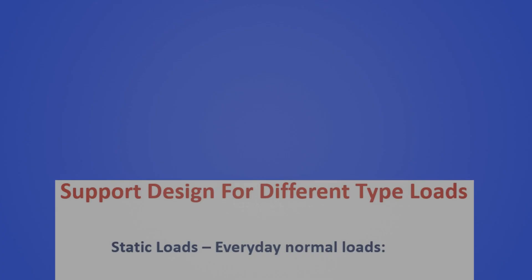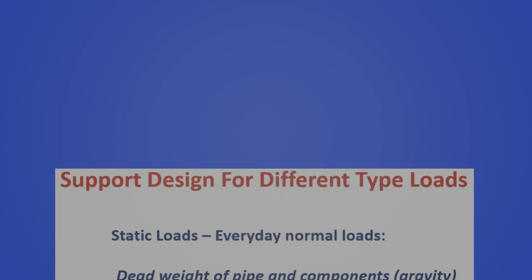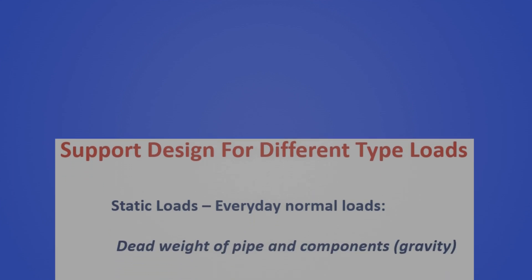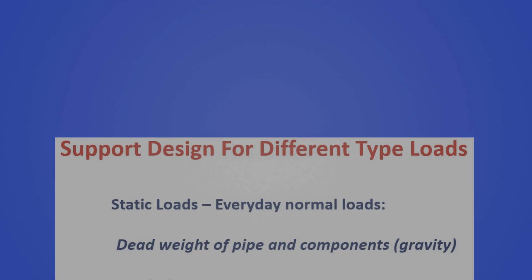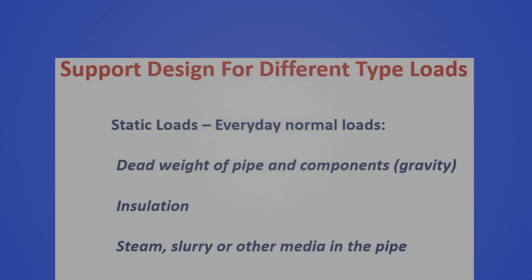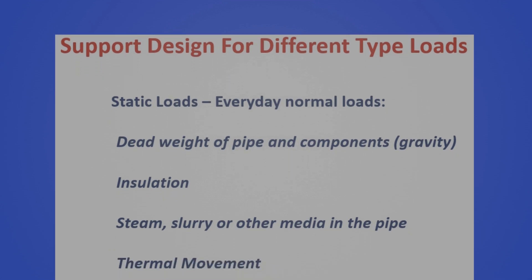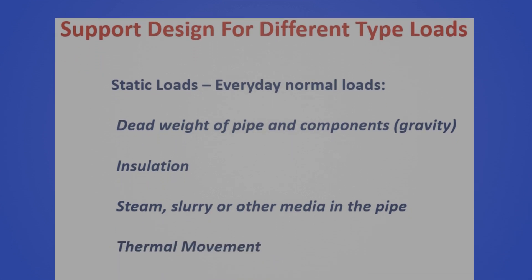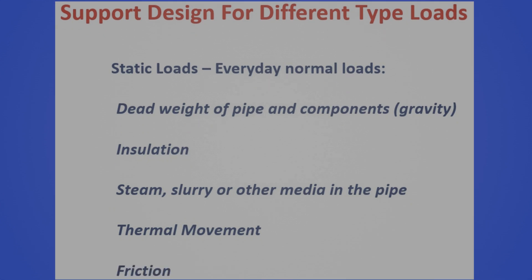Static pipe supports are designed to handle the everyday normal loads, such as gravity — meaning the dead weight of the piping and components, the weight of the insulation that surrounds the pipes, and the weight of whatever is flowing through the pipe, such as steam, a slurry, or other media. Thermal movement includes the expansion and contraction of pipes and vessels. And finally, friction, usually caused by pipe movement while the pipe support is resting on something fixed, which is especially common when the pipe is supported from below.